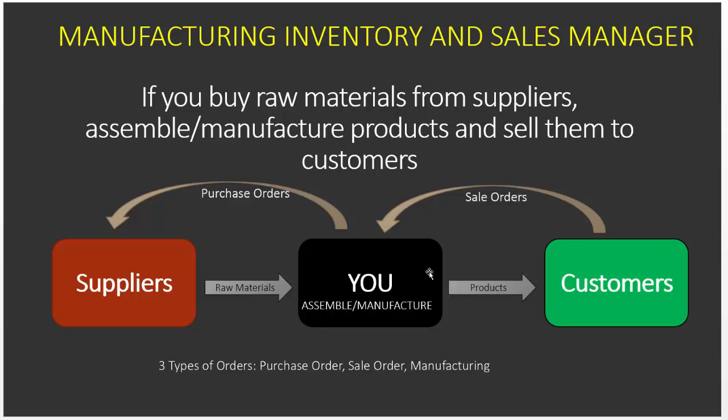If you are a business that actually manufactures products and holds them in your warehouse, then you would use the manufacturing order type. We'll go through these order types in detail later in this video, but this is the type of business scenario this new template addresses.